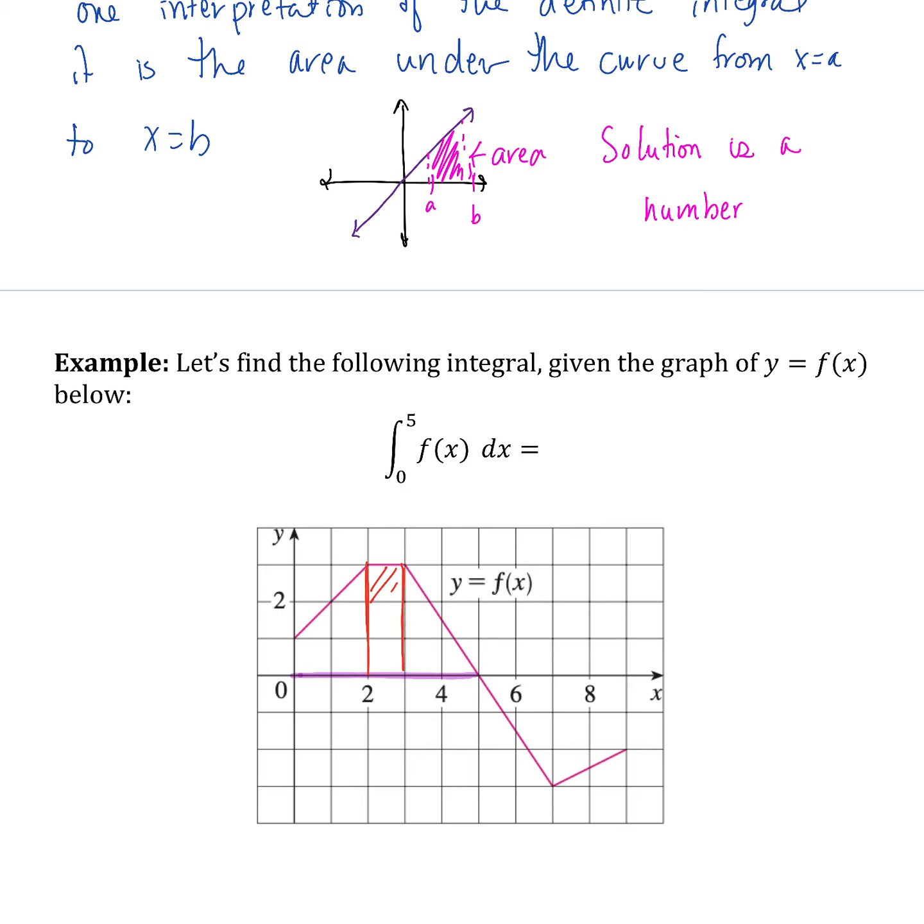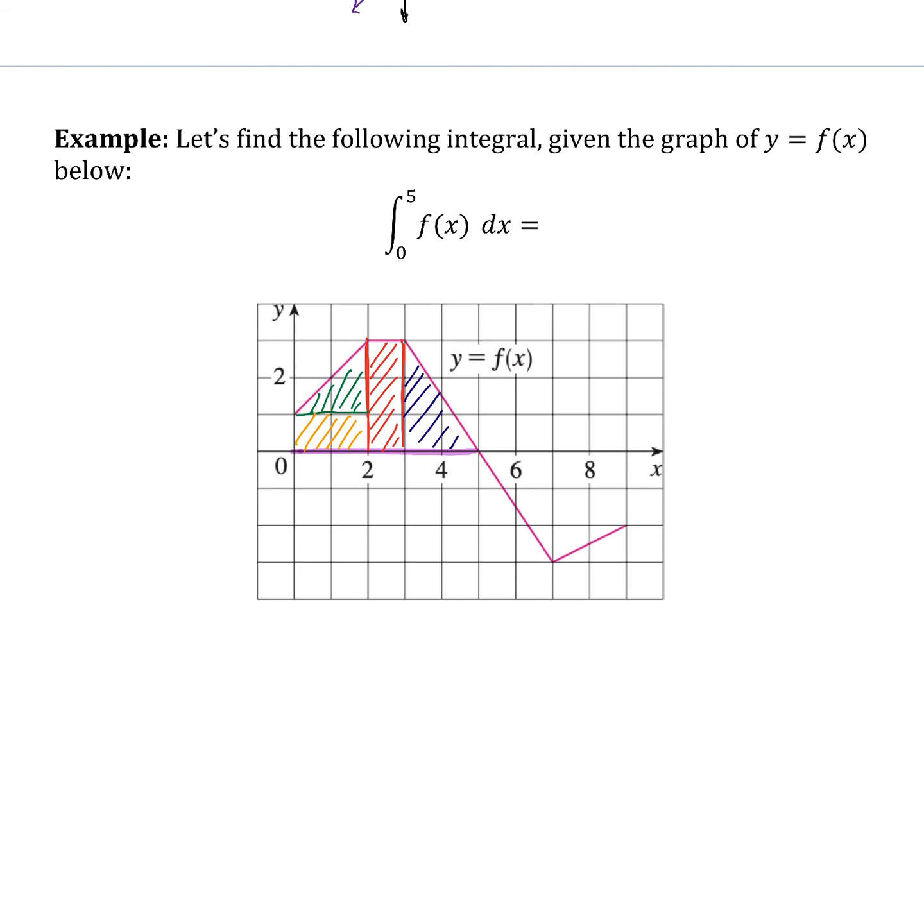We've got a rectangle here, in the middle there's a triangle, and we have a trapezoid over here. If we want, we can cut this up into a small triangle and a small rectangle. So basically we've got four areas that we need to find and add them up.